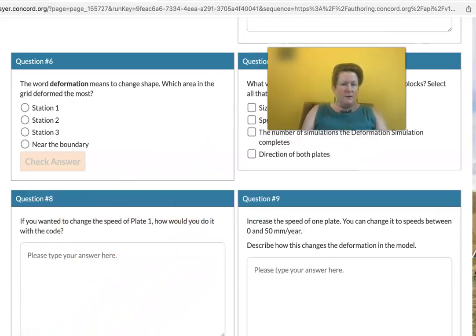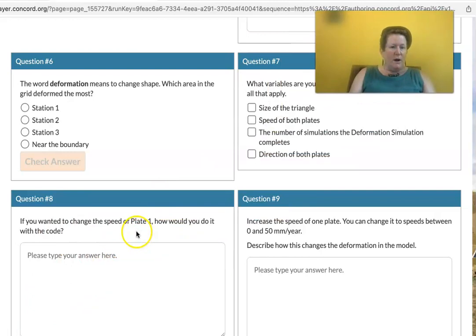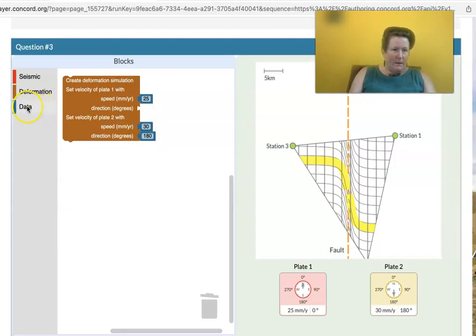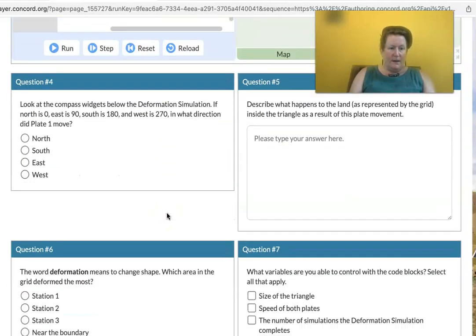If you wanted to change the speed of plate one, how would you do it with code? Well, let's look up here. There's the speed. And you could think about what you want to put in there.